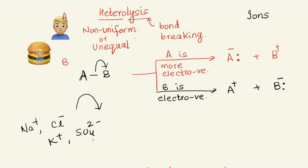There are two types of ions: a cation — a positively charged ion — and an anion — a negatively charged ion. So during heterolysis of a bond, ions are formed. We are talking about organic chemistry here; you can pause the video to note these structures down.